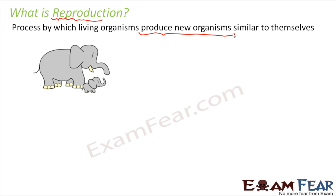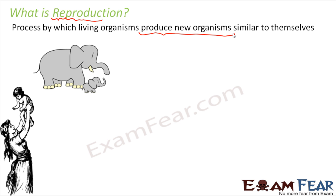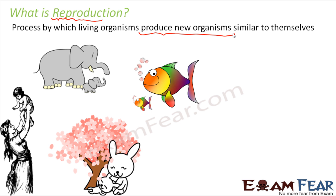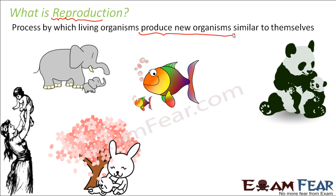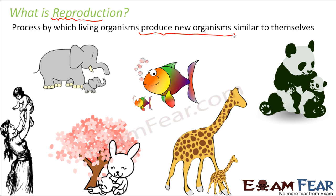Take the example of any living organism — think of an elephant. The kid of an elephant will look similar to an elephant and not to a human being. Similarly, a human baby will have similarities to human beings and not to any other animal. A giraffe's child looks like a giraffe, a fish looks like a fish, an elephant looks like an elephant. Each of these organisms produces new organisms that are similar to themselves.